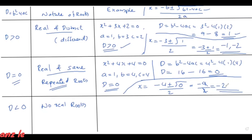So this is the case of equal roots. To summarize: when D equal to zero, the solutions are equal. When b squared minus 4ac is greater than zero, the real roots are different. When D equal to zero, we have same roots — repeated roots. When D is less than zero, there are no real roots.